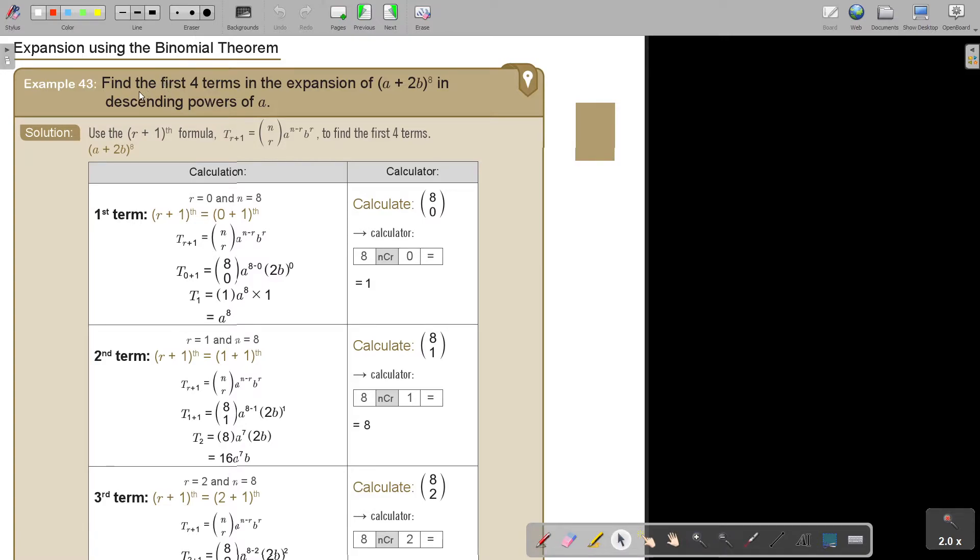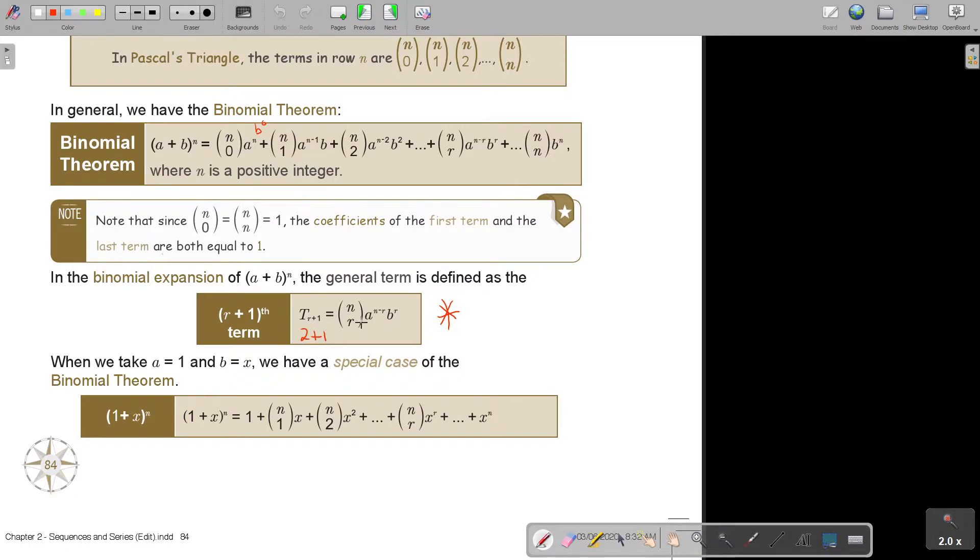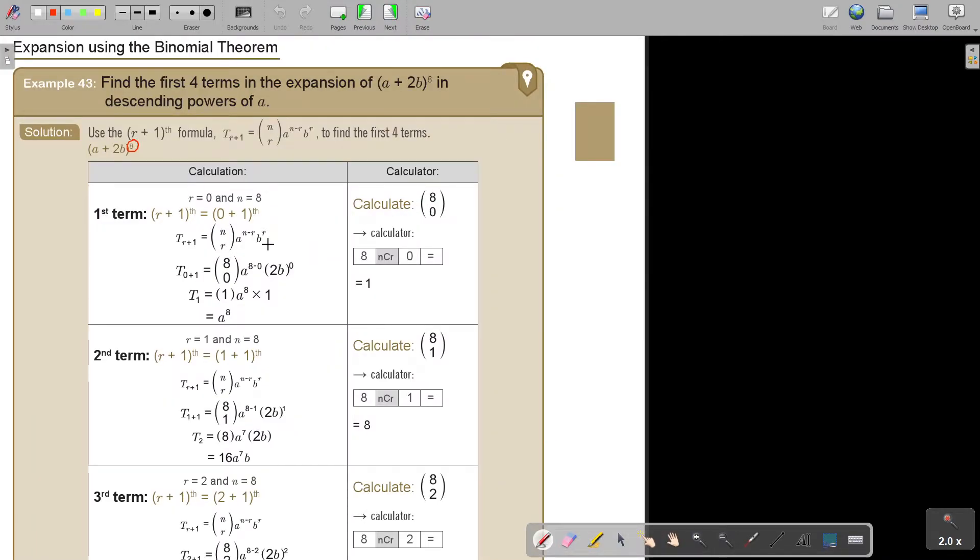So I'm going to say, find the first four terms in the expansion in descending powers of A. Now, first you have to look what is this exponent. So it's 8, so it's (8,0), that will be the coefficient. Then, if I look, it's the first term, so it's N minus R, so this is going to be 8 minus 0. This is now showing that formula very good. And then the second term, 0. So this is the first term.